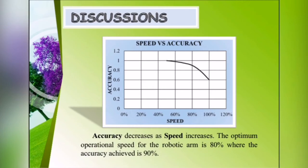Discussion: Accuracy decreases as speed increases. The optimum operational speed for the robot arm is 80%, where the accuracy achieved is 90%.